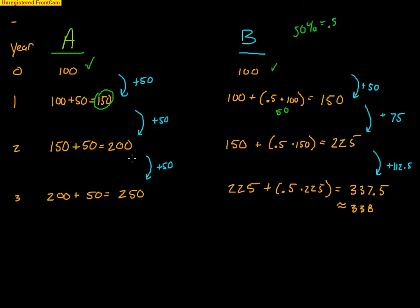But in year two, A just added 50 new stores again, to get 200 stores. Whereas B is going to take what they have currently — 150 — and add 50% of that. So 50% of 150 gives us a grand total of 225. That's a 75-store increase. So B increased by 50 the first year, then 75 the next year.